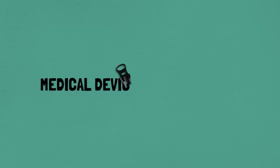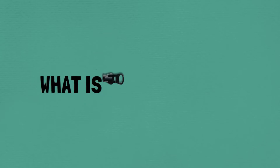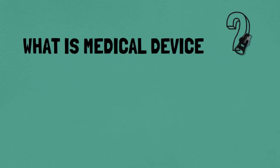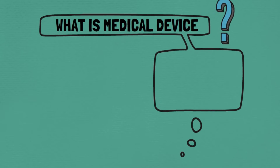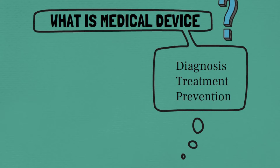There are different classifications of medical devices based on the region. This is the FDA classification of medical devices, specifically for the US region. A medical device is a device which is used for diagnosis, treatment, or prevention of any disease or any other conditions in man or animals, or it can be a device which is intended to affect the structure or function of the body or any of its parts in man or animals.